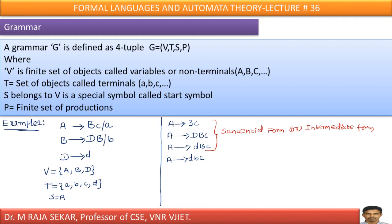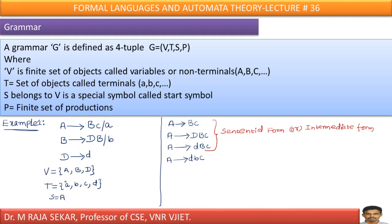V means non-terminals. Capital A, capital B, capital D — they can produce something. A, B, D are known as variables or non-terminals. Small letters means terminals. Small a, small b, small c, small d — they cannot produce anything. These small letters can be treated as terminals.